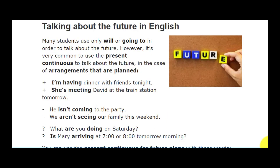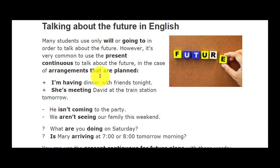Let's look at some example models. The construction of sentences will be the same. For example: 'I am having dinner with friends tonight.' Notice that 'tonight' — aaj raat, yani jo aane wali raat hai — is the future time marker here.